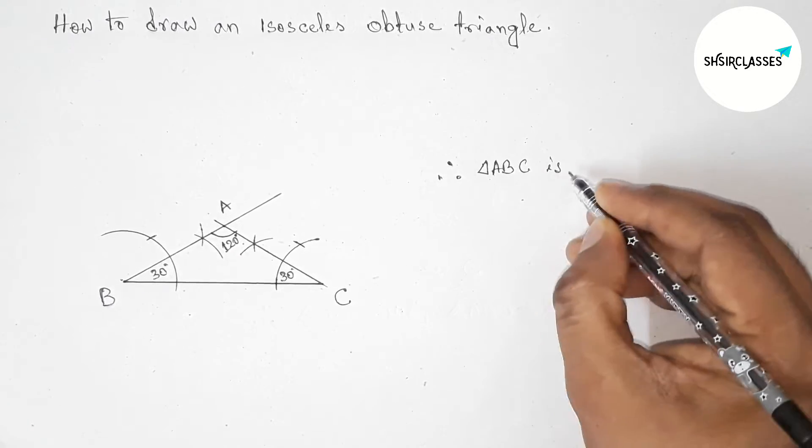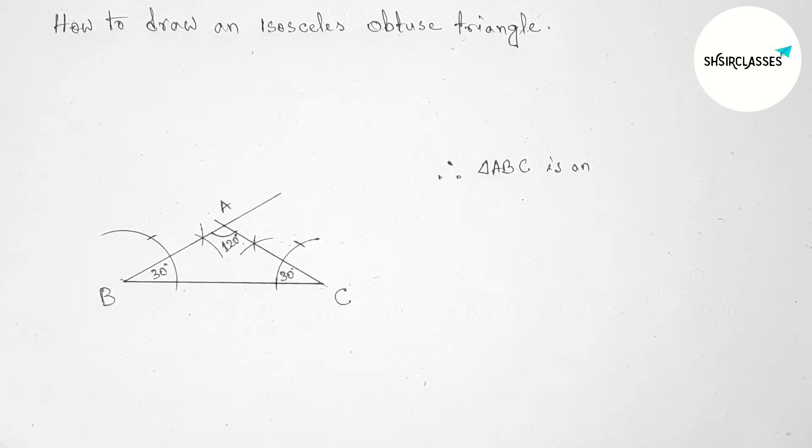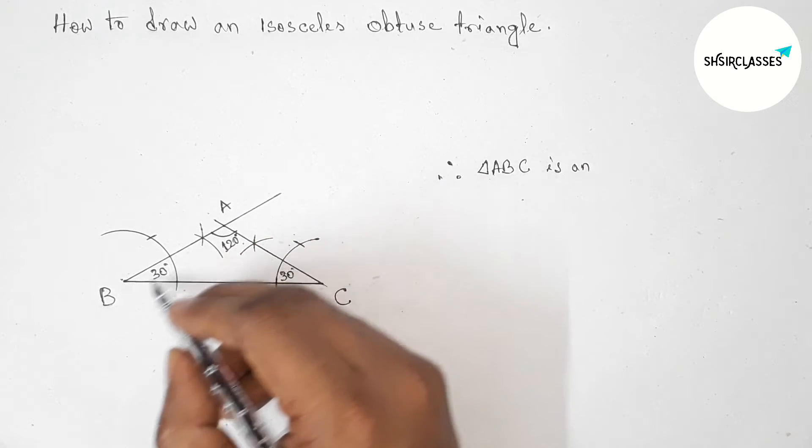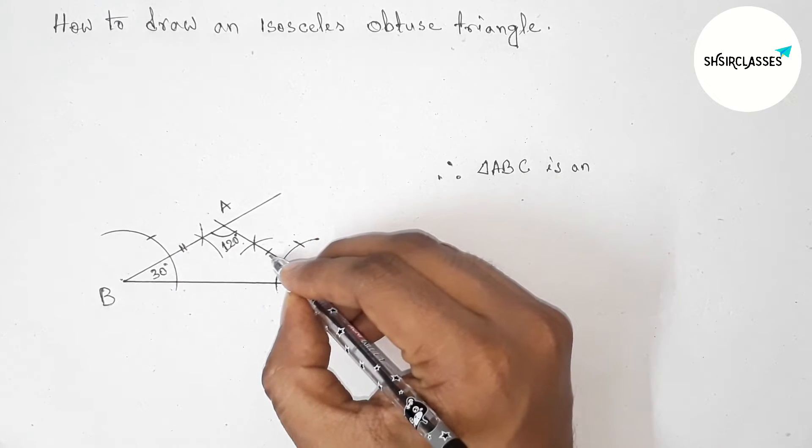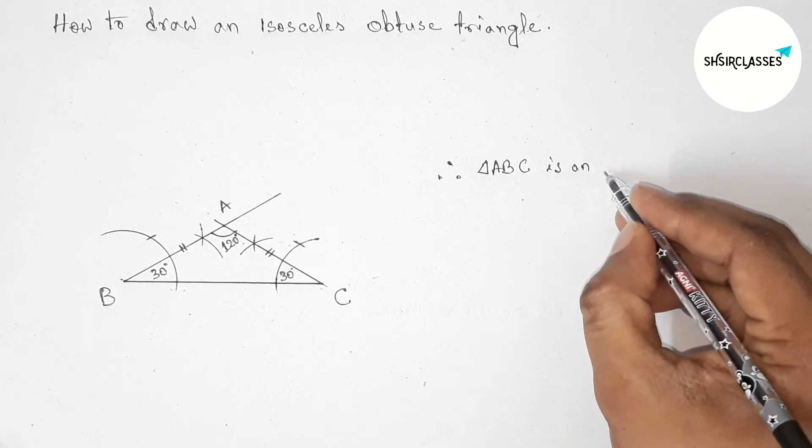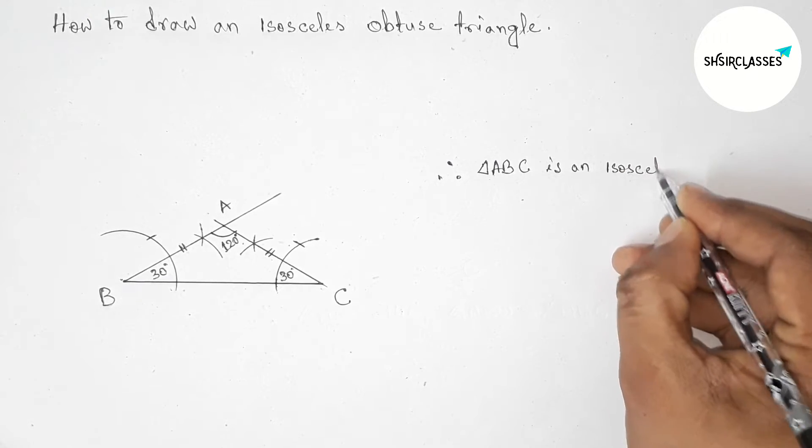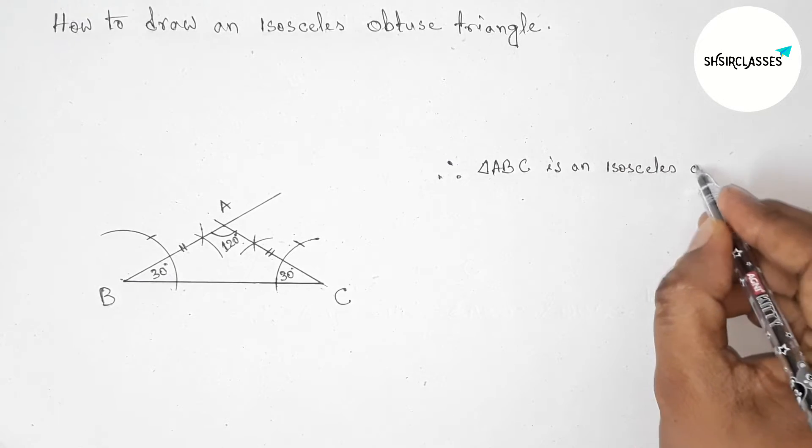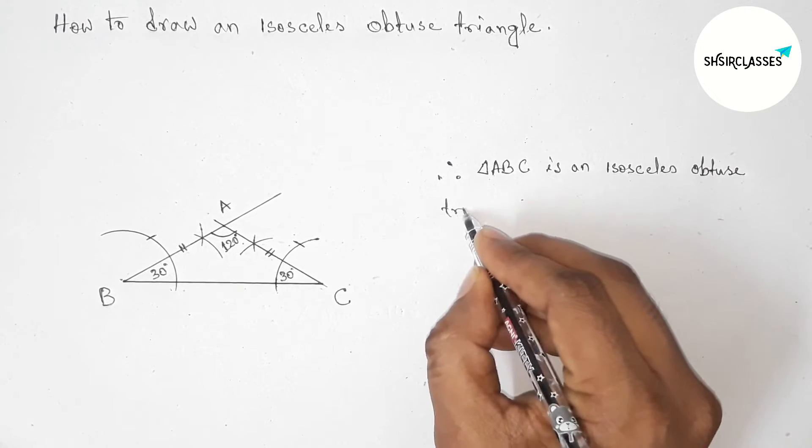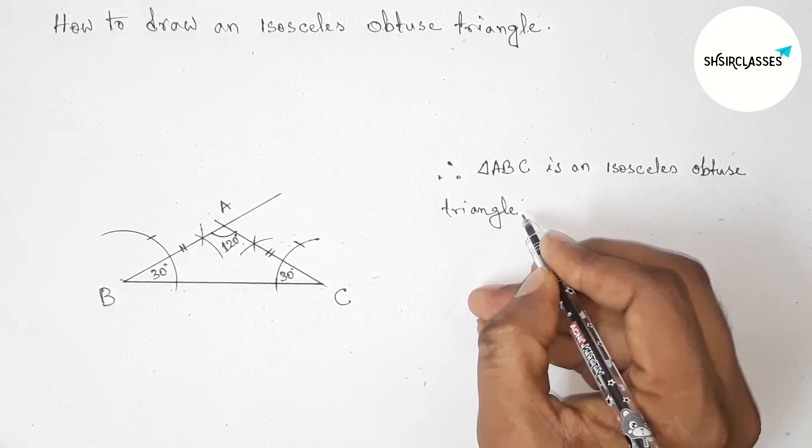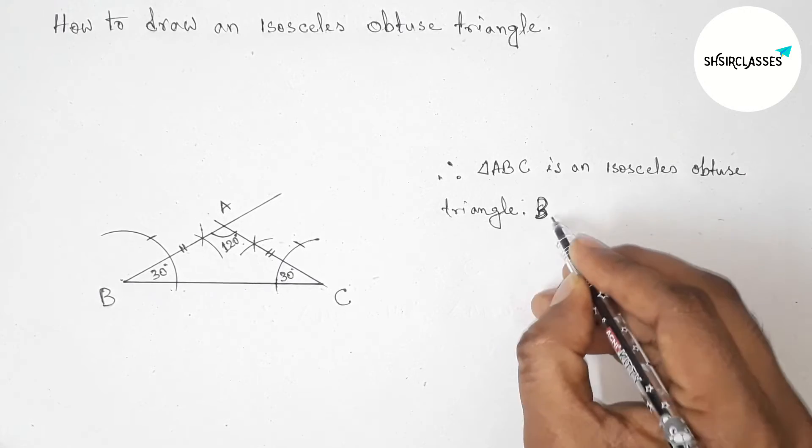obtuse angle triangle because this angle and this angle equal, so obviously this side and this side equal above. So by this condition we can say that the triangle ABC is an isosceles obtuse angle triangle. Now write down here the reason.